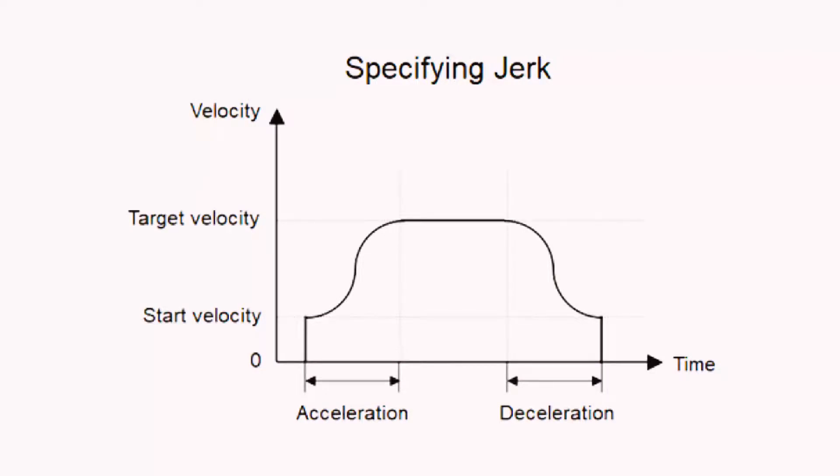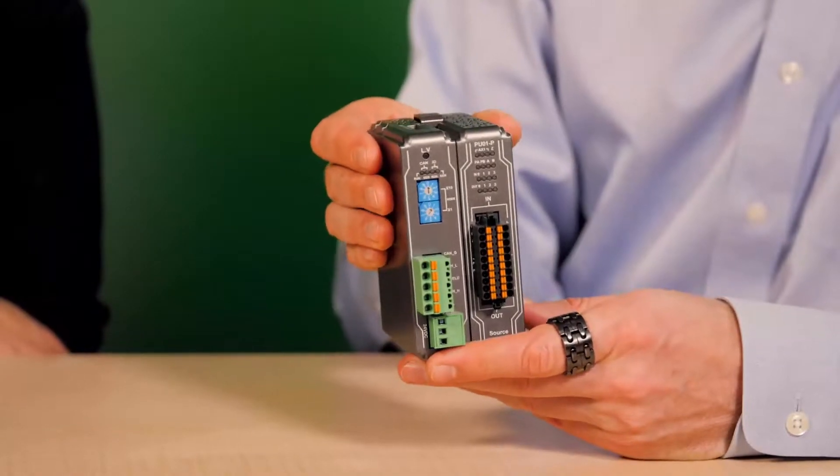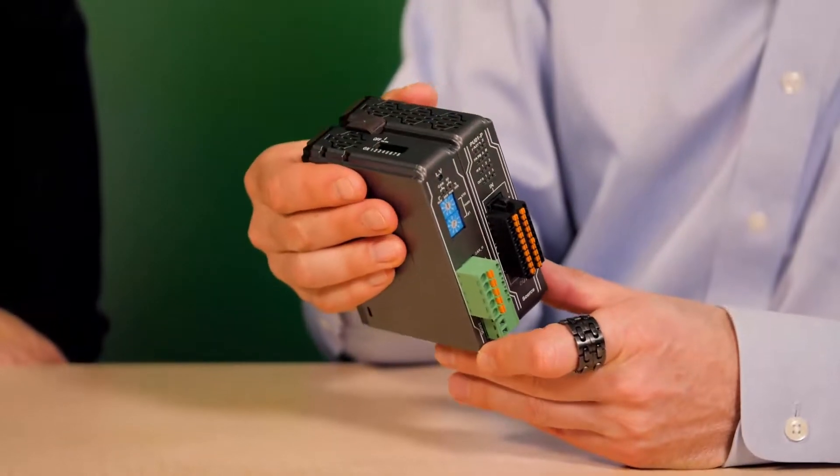Based on PLCopen motion control and CIA-402 standards, the function blocks are easy to use and they minimize the need for learning and development. All Wintec IR communication couplers work with the IRPU01P control.